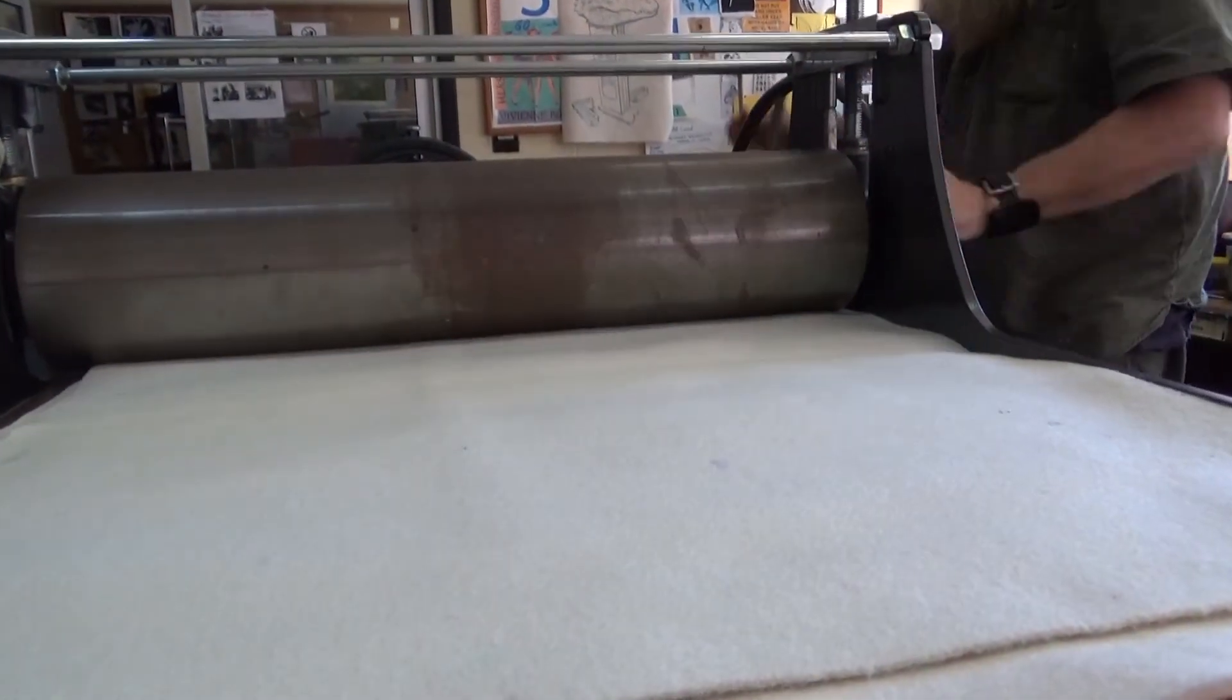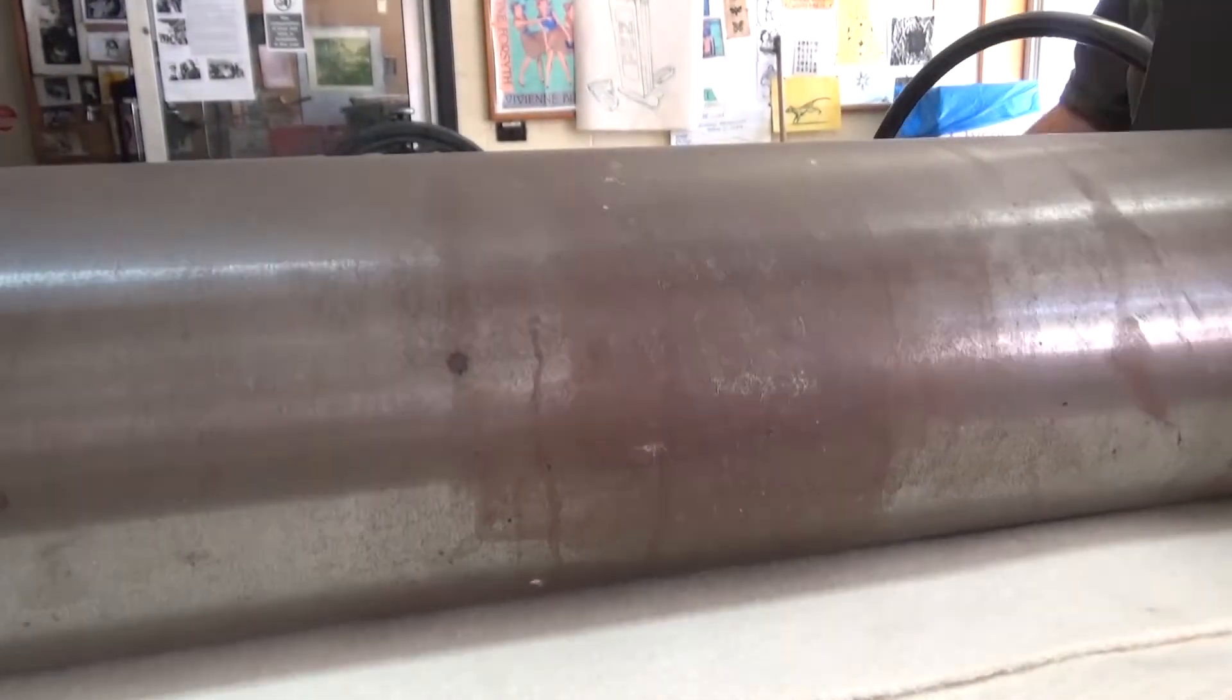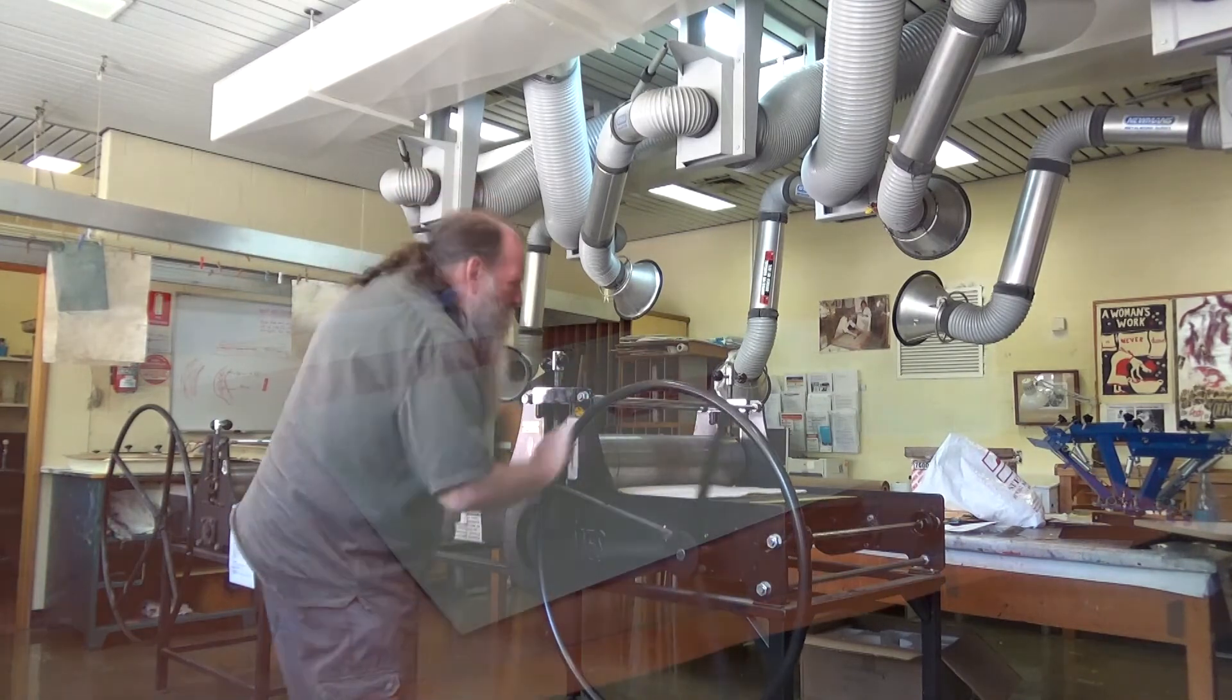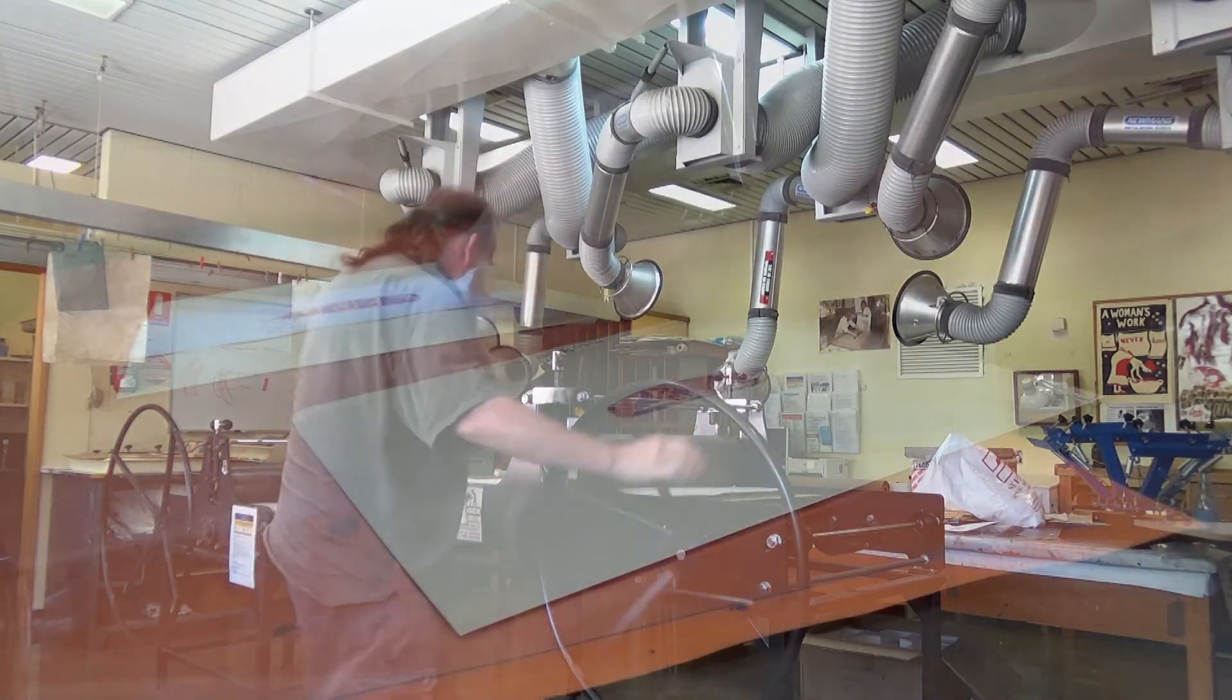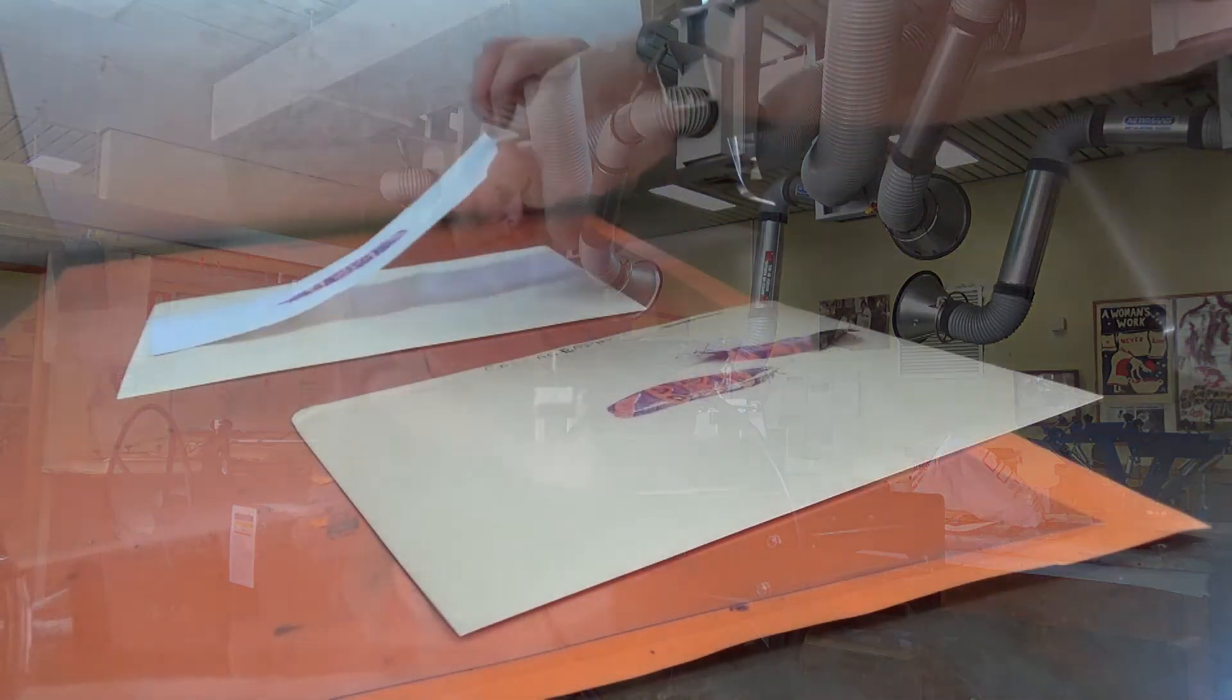So always remember this first initial print going through is just to transfer the ink onto the feather. Once you've run that through the press, you have the ink on the feather. You then put the feather onto your piece of paper, dampened paper, run that back through the press again, and then you have your print.